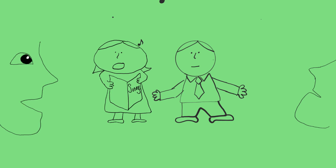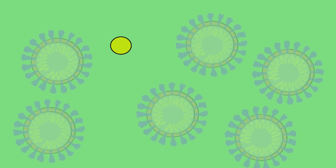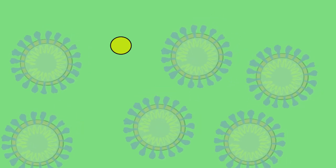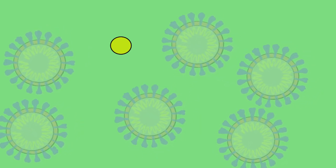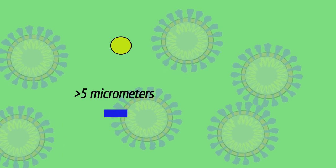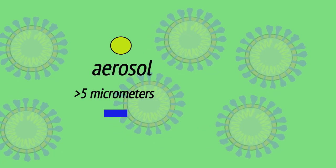When a person emits a particle, whether it's through coughing or sneezing or talking loudly or singing, we typically try to divide the particles that they emit into two types of modes or distributions. One of them will be small particles. These are particles that are going to be less than at least 5 micrometers in diameter. We call these aerosols.